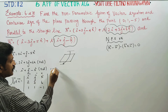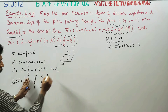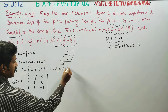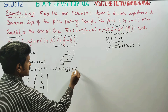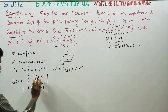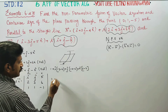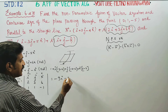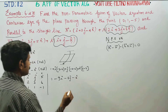Expanding the determinant with plus, minus, plus: i into (minus 3 minus 6), plus j into (minus 2 minus 6), plus k into (2 minus 3). This gives us minus 9i, plus 8j, minus k.